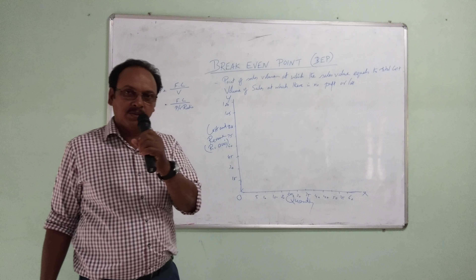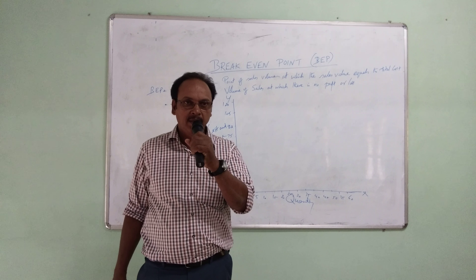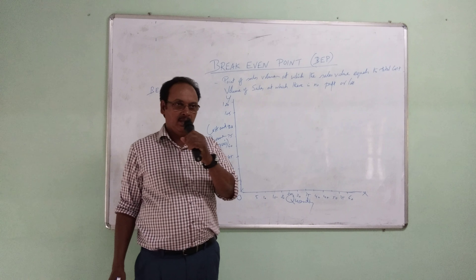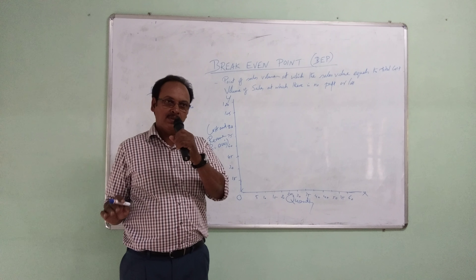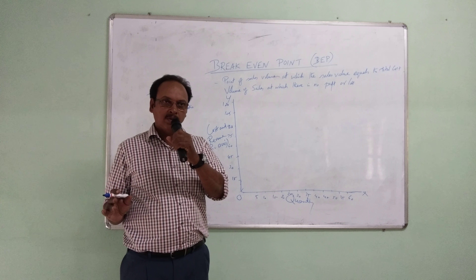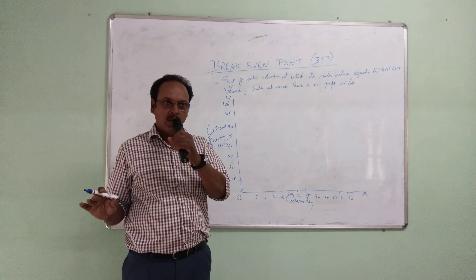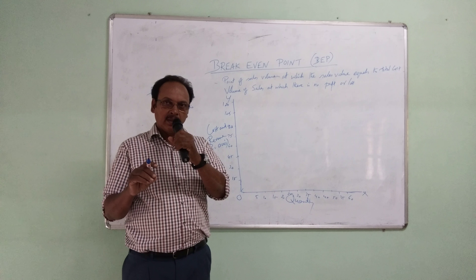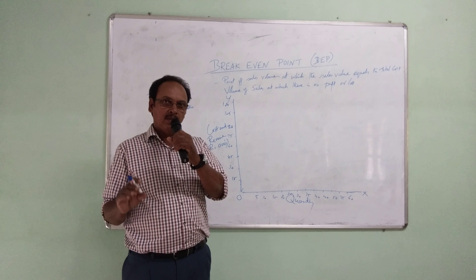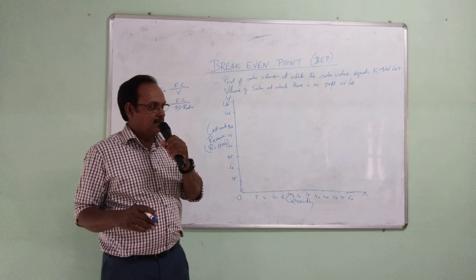Dear friends, greetings and wishes to every one of you. Today we are going to study a topic: break even point, otherwise called as BEP. Break even point is a point of sales such that the sales value equals the total cost of production. It means there is no profit or no loss at that quantity — that point is called the break even point.